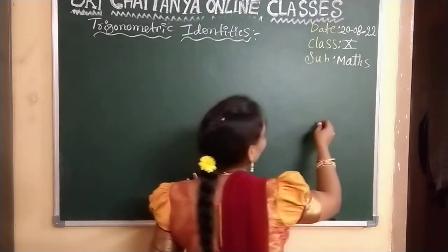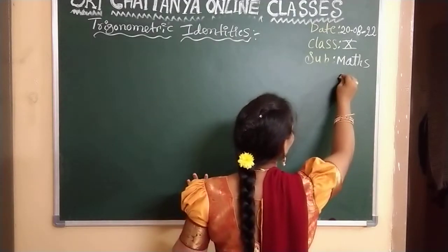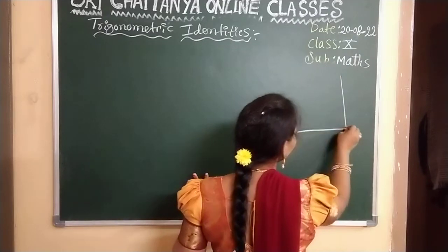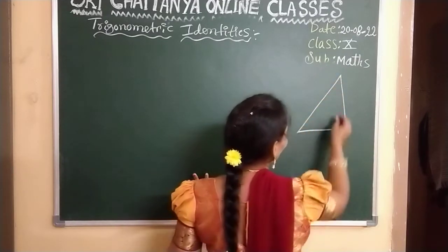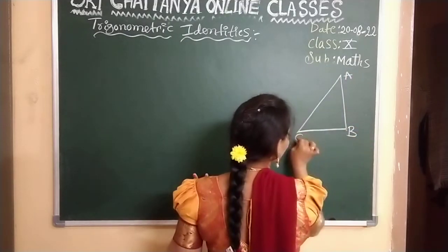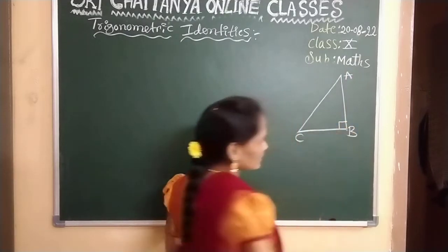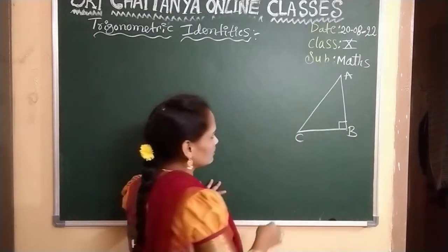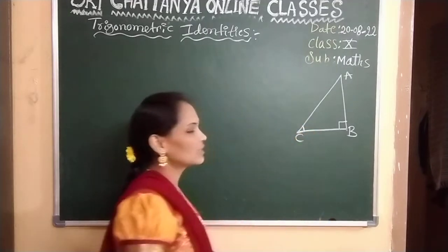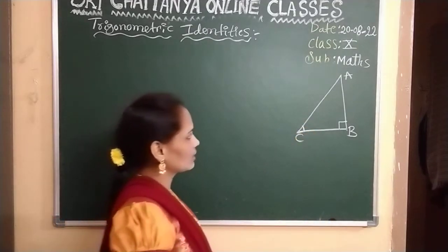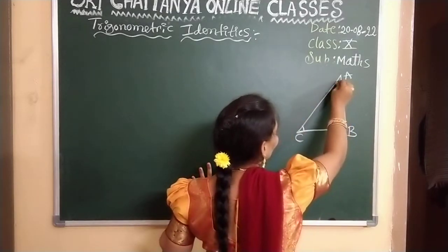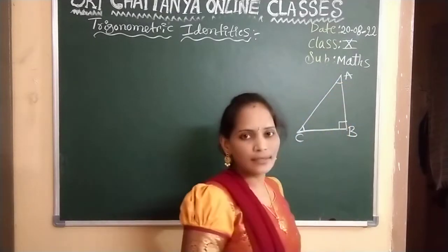Now let us consider one right angle triangle. Let us take A, B, C. Right angle is at B. Now take one angle at C — you can take one angle theta. Here, we are talking with respect to angle A.